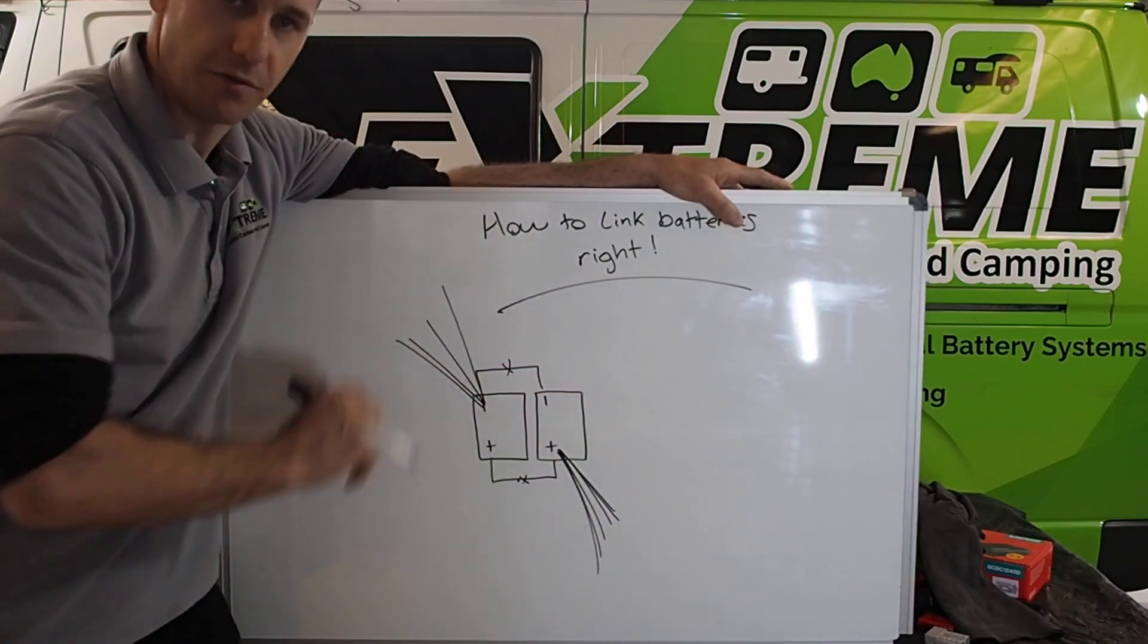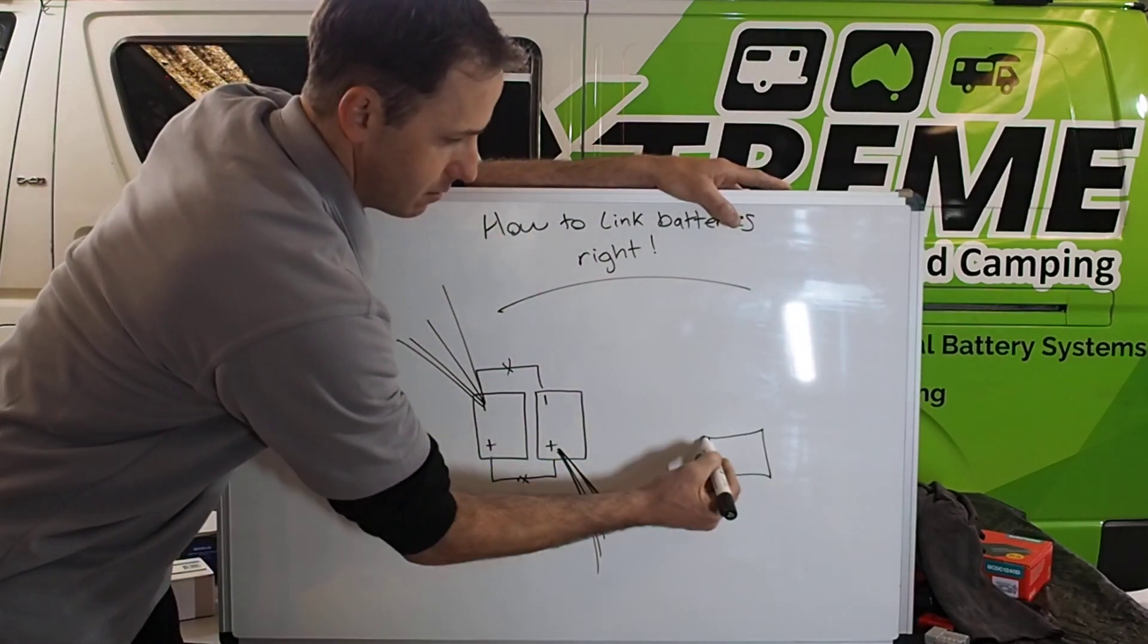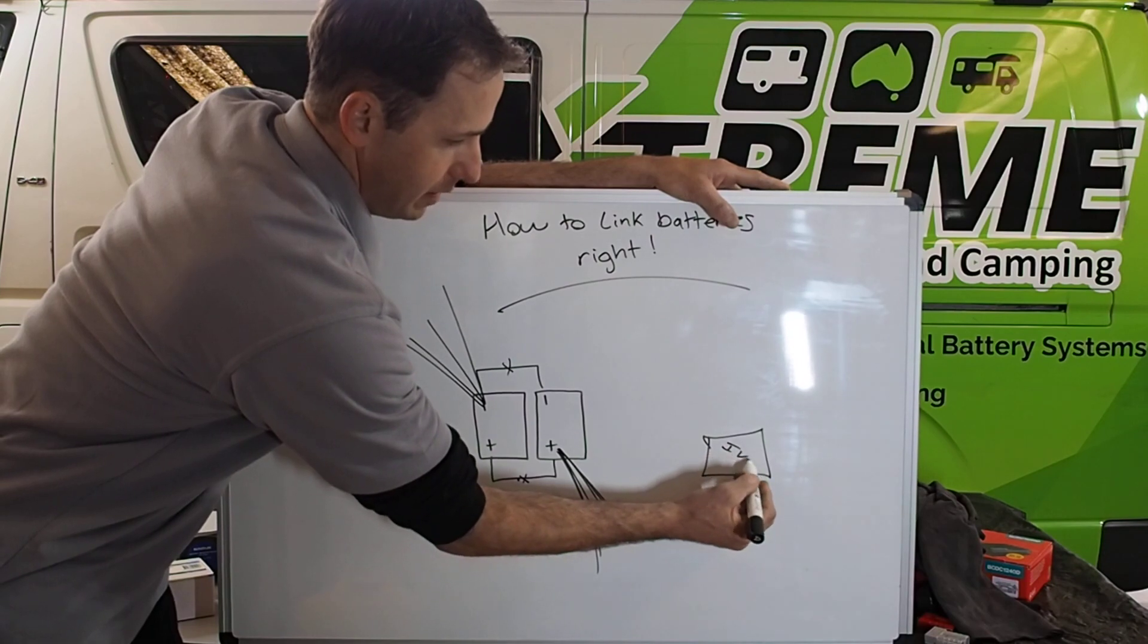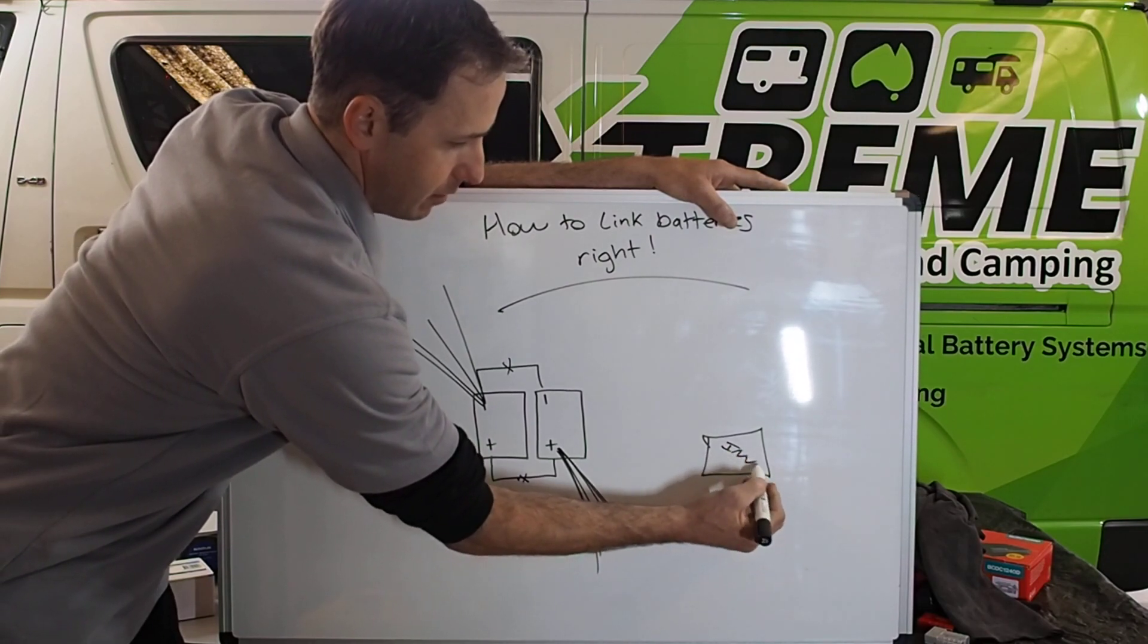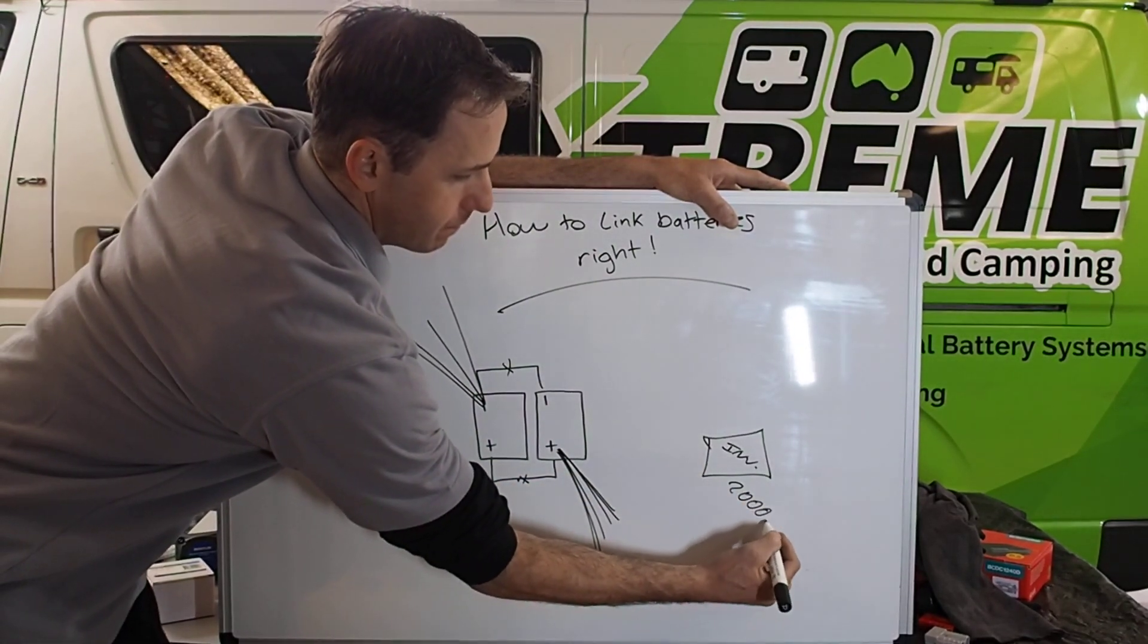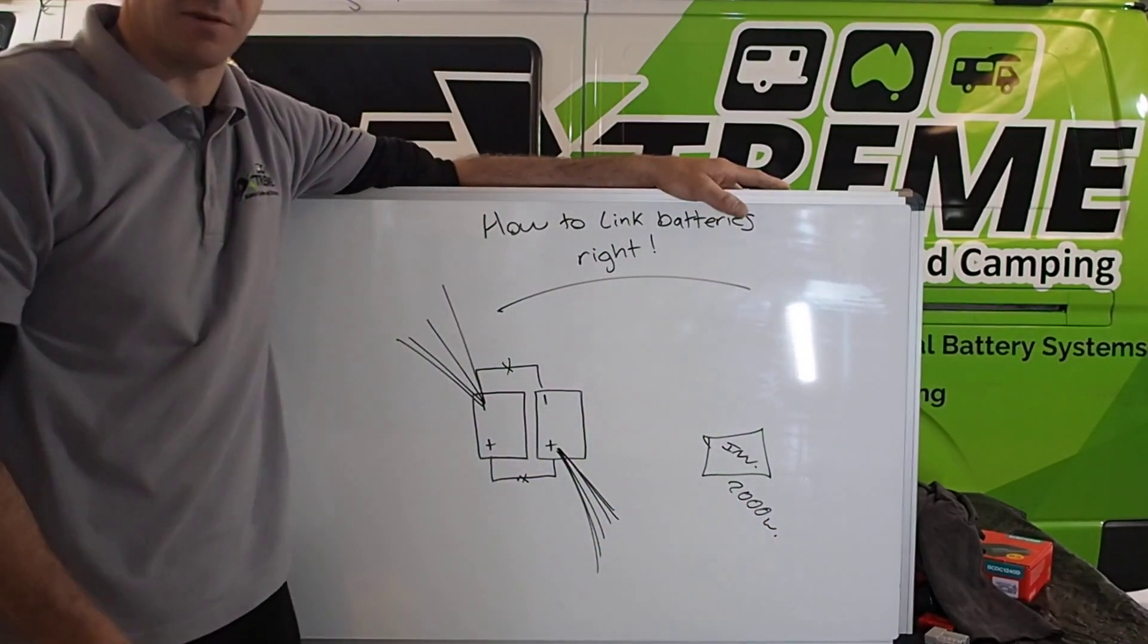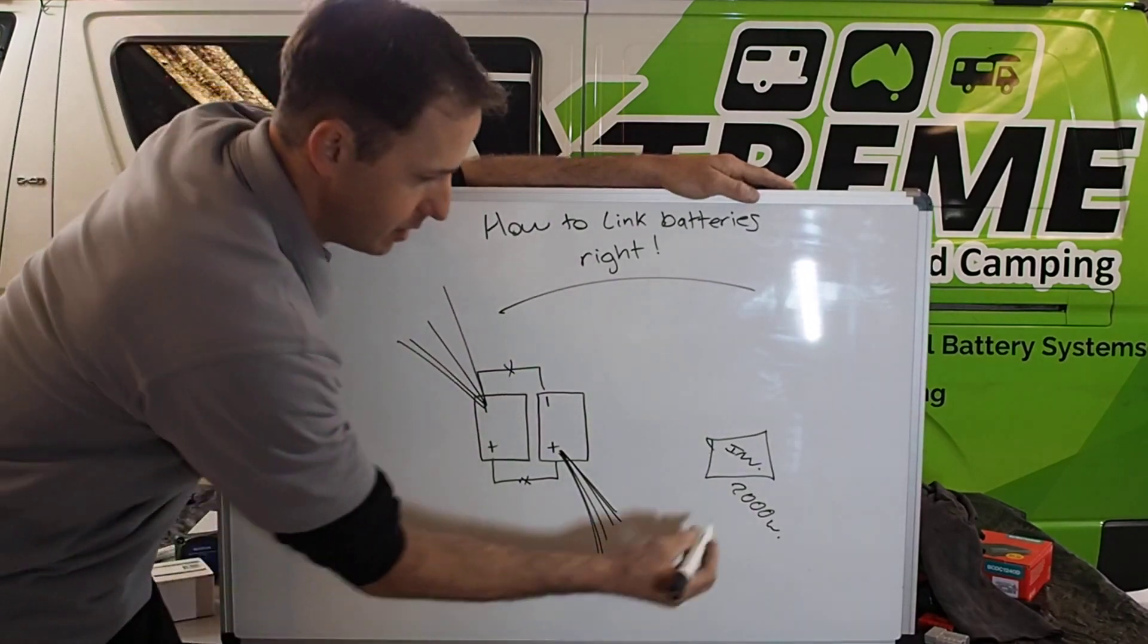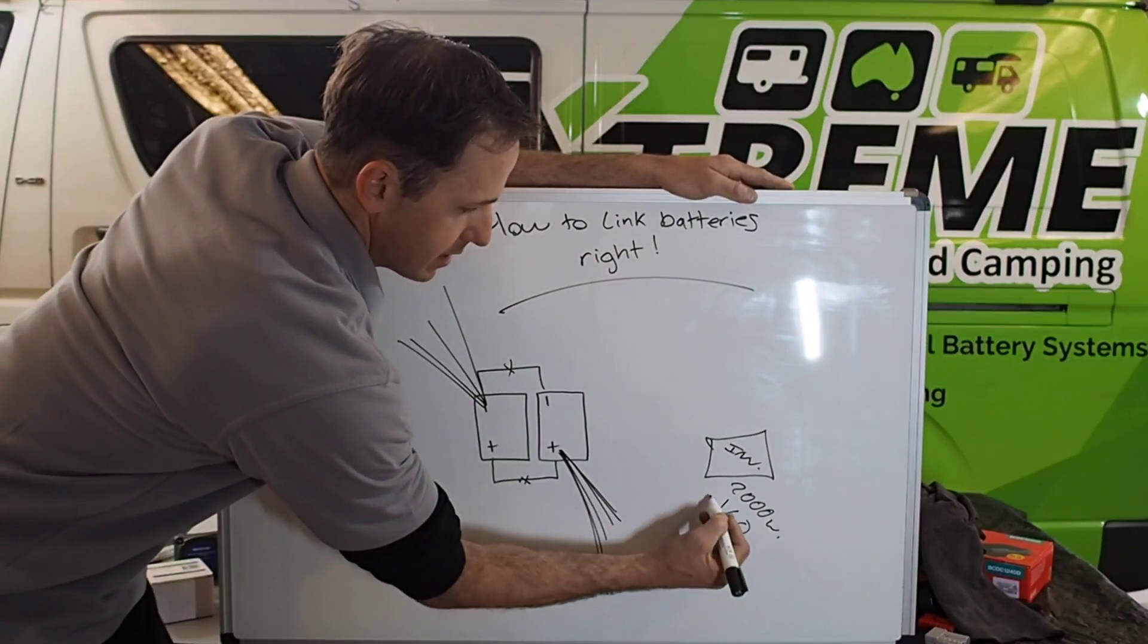If there was a 2000-watt inverter on this—big inverter, 2000 watts—it's going to pull upwards of 160 amps. So you get a 160-plus-amp load.